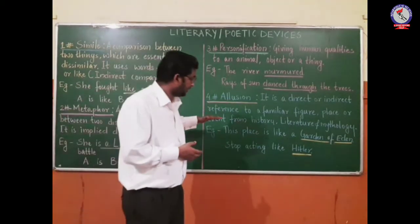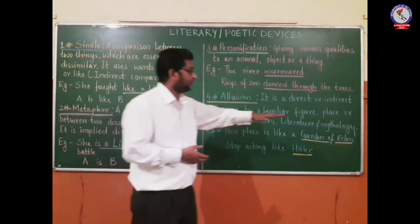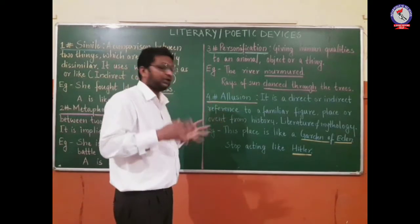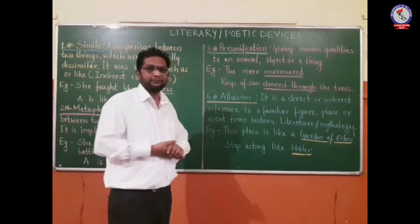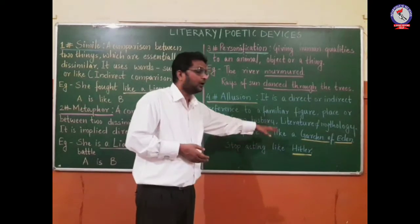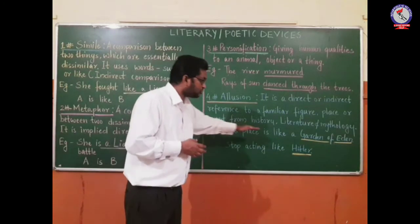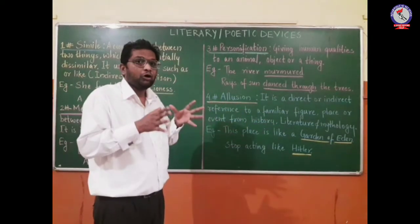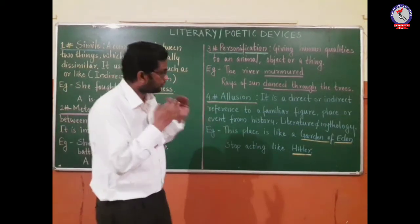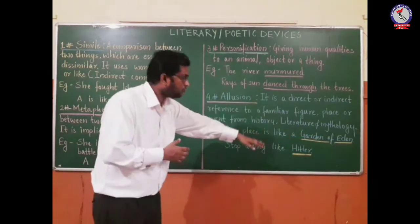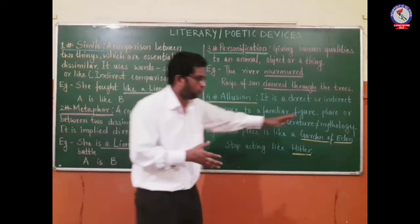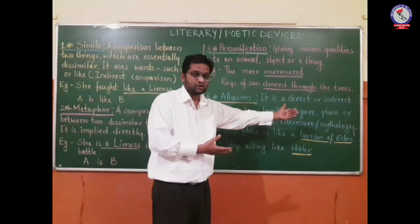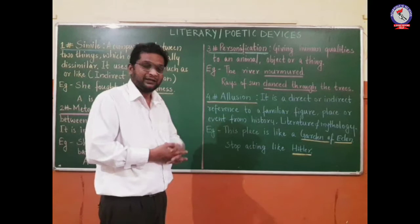We can take events, figures, or places from history, literature, or mythology. The reference to those things, places, persons, or events is defined as allusion. For example: 'This place is like a garden of Eden.' The garden of Eden does not literally exist, but its description is found in a religious book, so the place is compared to it.